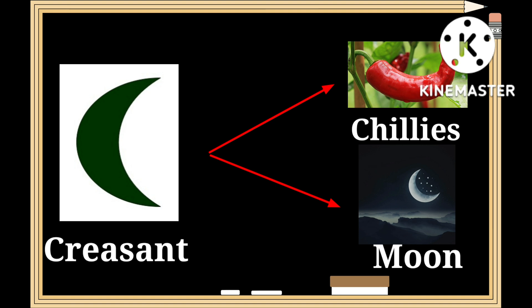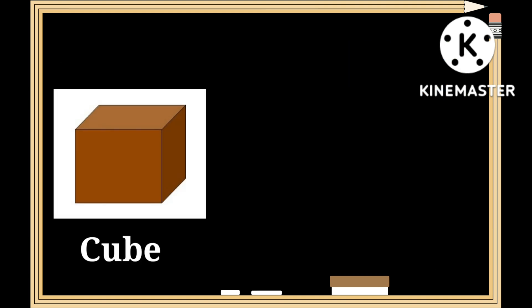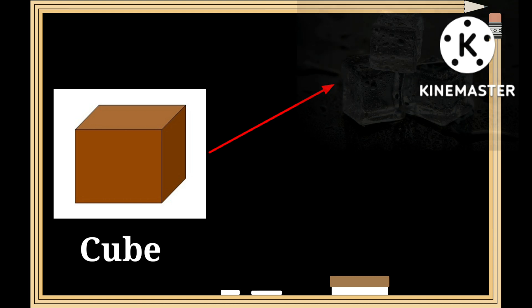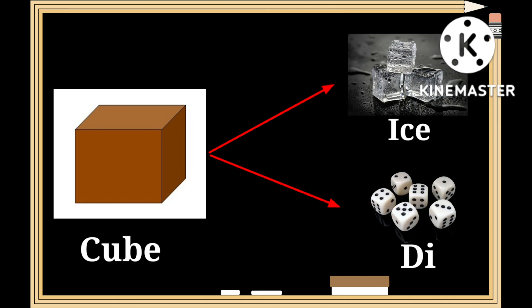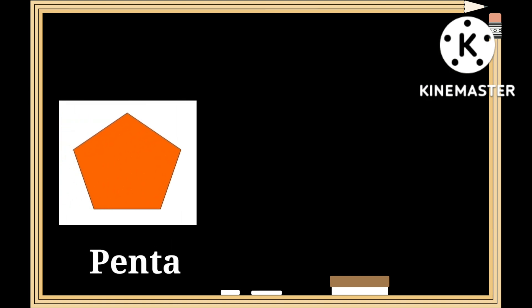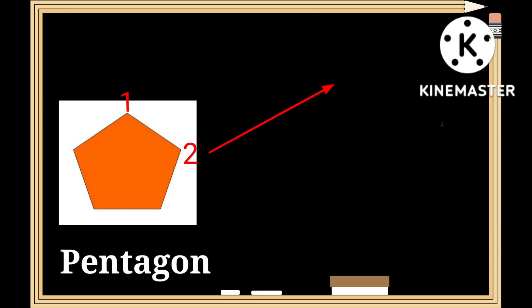This is a shape of a crescent — c-r-e-s-c-e-n-t. The shape of chilies and the moon have a similar shape to that of a crescent. This is a shape of a cube — c-u-b-e.